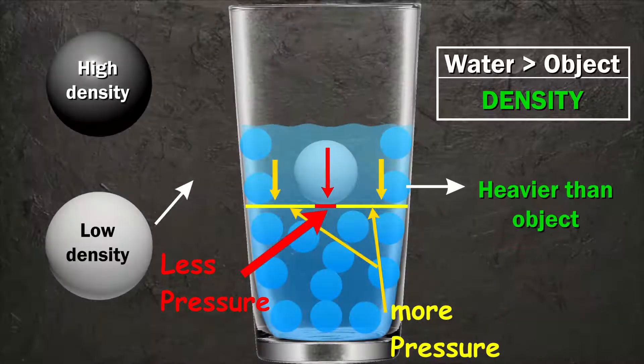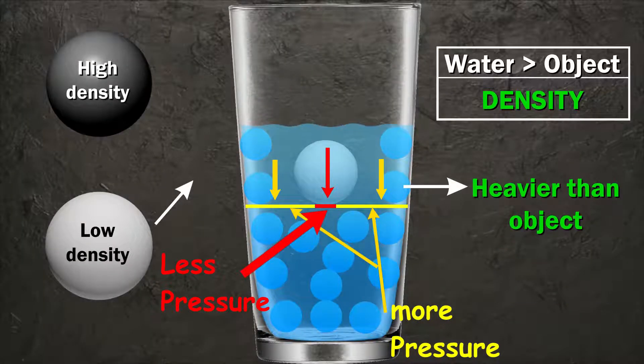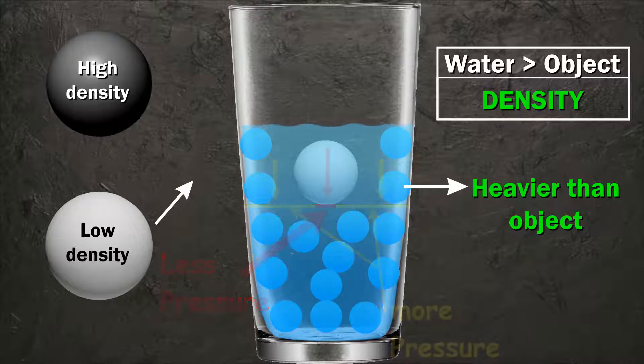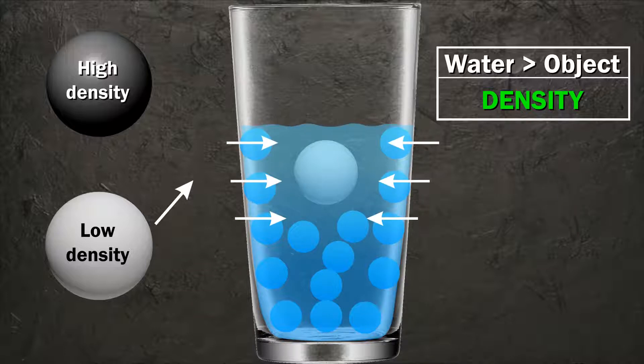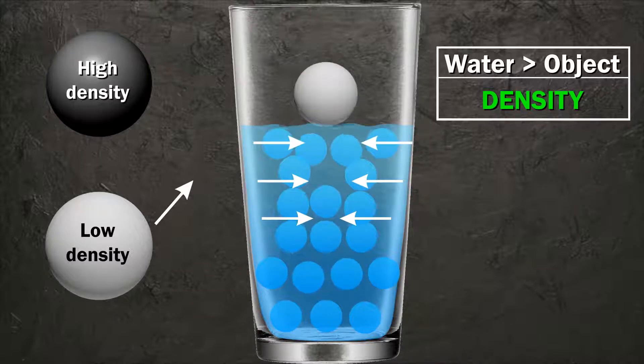This happens because water is heavier compared to the object for the same volume. In this scenario, water particles move from the side to under the object and exert a lifting force which causes the object to float.